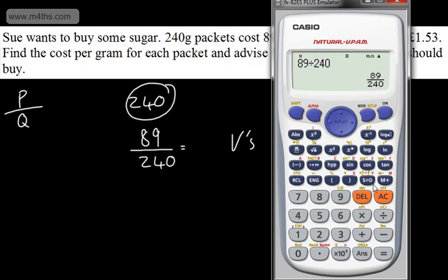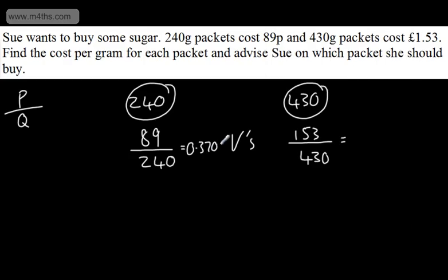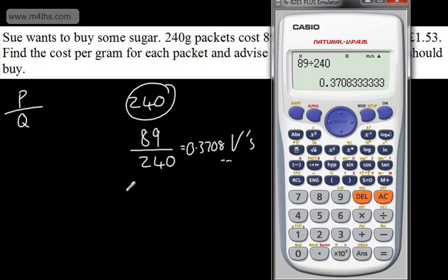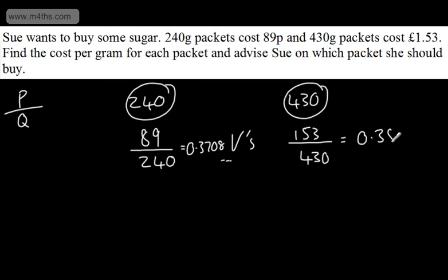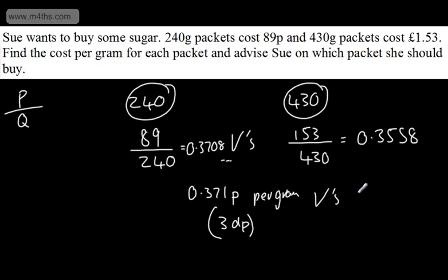So 89 divided by 240 gives me 0.3708 dot dot dot. Let's just check that. And then if we do the next one we're going to have now 153 divided by now the 430. So 430. And that's going to give me now 0.3558. So if I give these now to three decimal places we can say 0.371 pence per gram. So we can write pence per gram. So I'm writing this in. And that is given to three decimal places. Versus now this one which is going to be 0.356. And that's going to be now pence per gram. So per gram. And that again is to three decimal places.